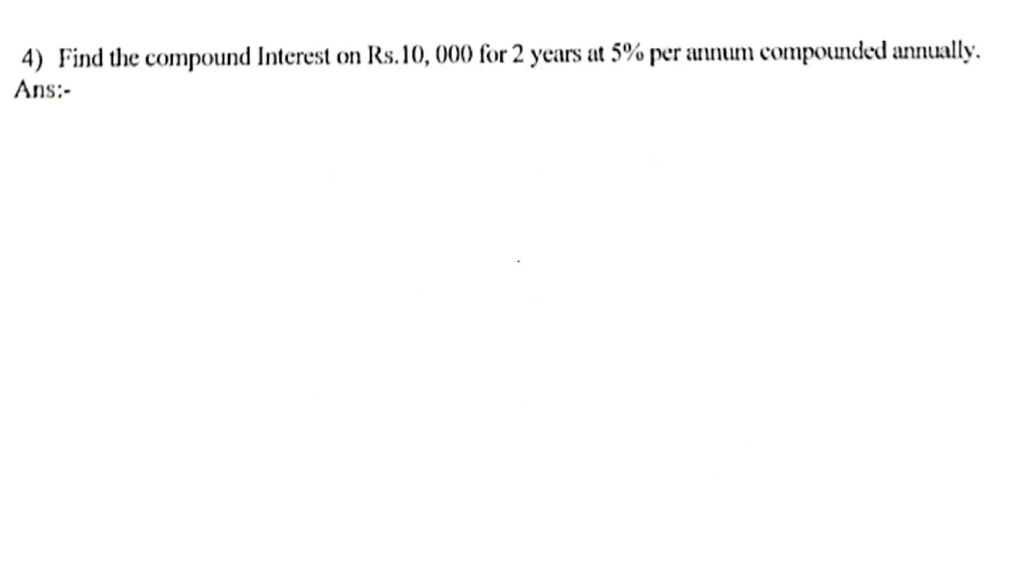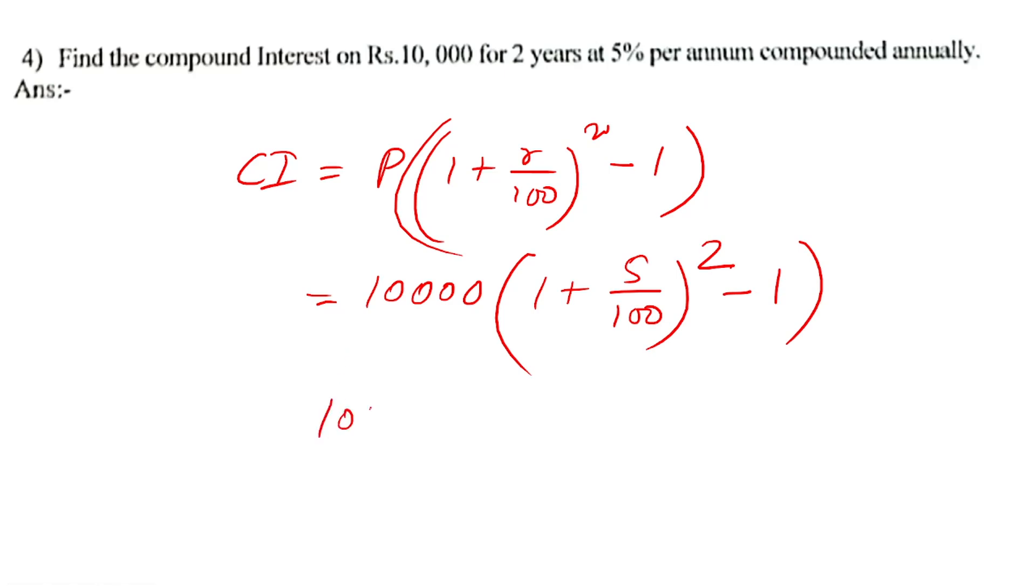After that, find the compound interest on 10,000 for two years at 5 percent per annum compounded annually. For compound interest, the formula is P times (1 plus r/100) raised to the power n minus 1. Here, compound interest will be principal 10,000 times (1 plus 5/100) for two years minus 1. That's 10,000 times (1 plus 1/20) squared minus 1.